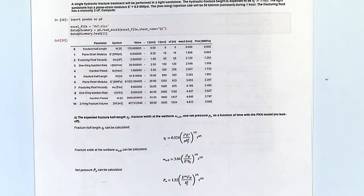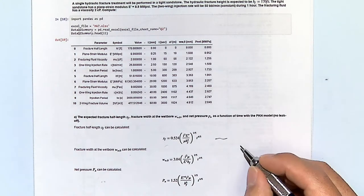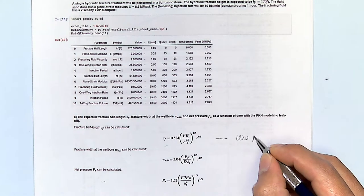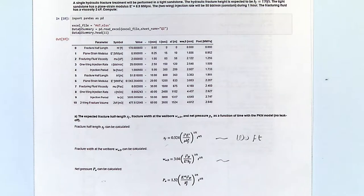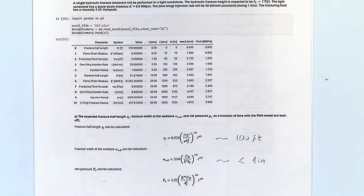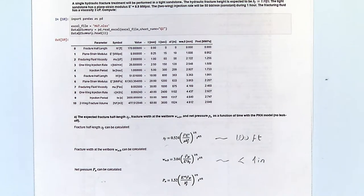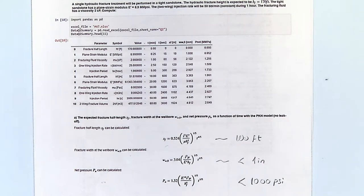Remember the typical values: for length, very likely you'll get on the order of hundreds of feet or more. For width, it's almost always less than one inch — if you get more than that it's very likely wrong. For net pressure, it won't go above a thousand psi; typically it's just a few hundred psi. Always check that your numbers make sense.